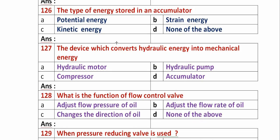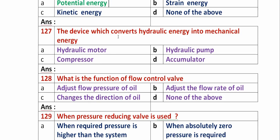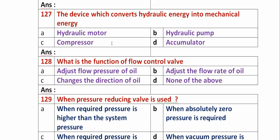Question 126: What type of energy is stored in an accumulator? Option A: potential energy. Option B: strain energy. Option C: kinetic energy. Option D: none of the above. Accumulators are devices used in hydraulic systems to store energy in the form of potential energy. So option A, potential energy, is the right answer.